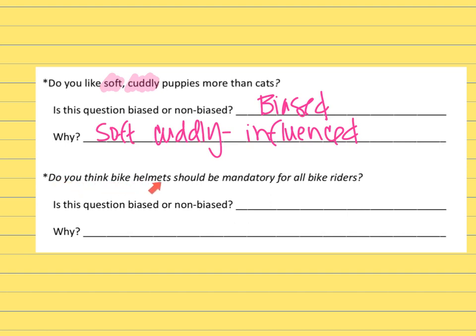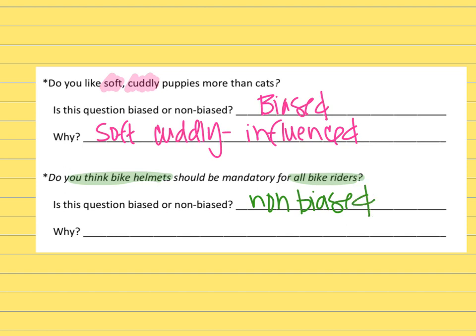The next one says: Do you think bike helmets should be mandatory for all bike riders? Sometimes people think the word 'mandatory' is a negative word, but this is actually letting people have their own opinion — because they're not saying bike helmets are good or bad, and they're not saying bike helmets save so many lives. They're just asking your opinion without using extra words that are positive or negative, so you get your own opinion. This would be non-biased.